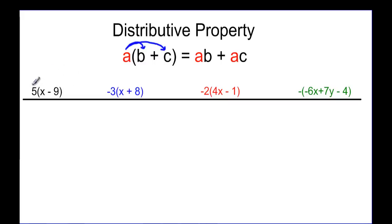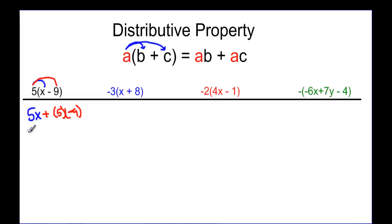Let's try an example. We want to take five times X to get five X, and then five times negative nine to get plus five times negative nine. So you get five X, and five times negative nine is negative 45. So you have five X minus 45.